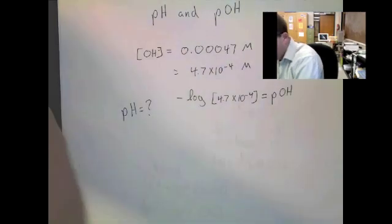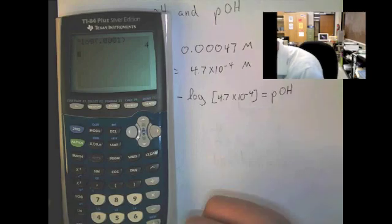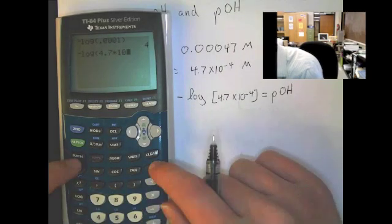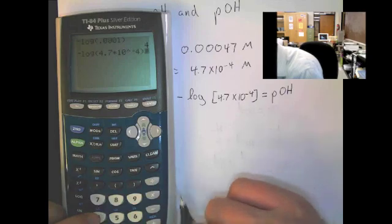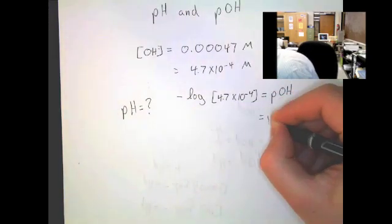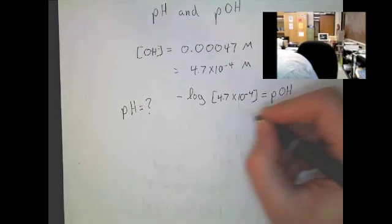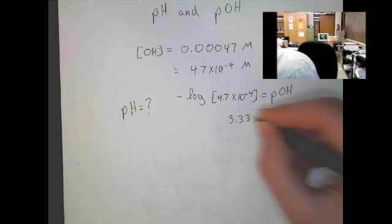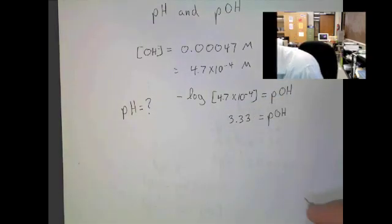To solve this, you just take the negative log of 4.7 times 10 to the negative 4th. And that gives you your pOH, which, in this case, is 3.3. We'll round it to 3.33.